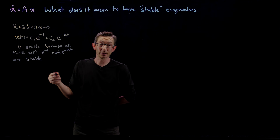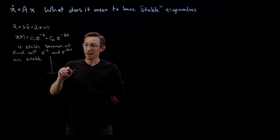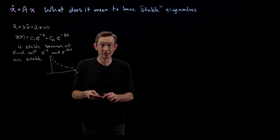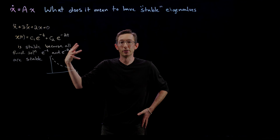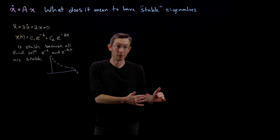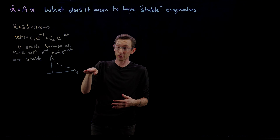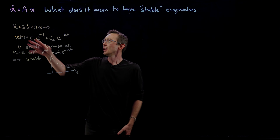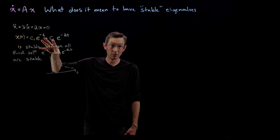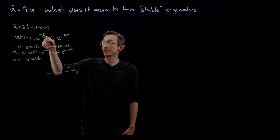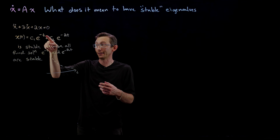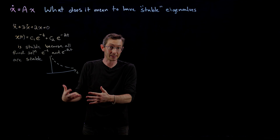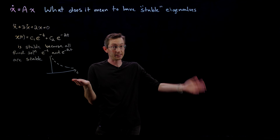What that means literally is that if I plot these functions as functions of time, they are decaying exponentials — they decay to zero as time goes to infinity. So this is stable because the solution goes to zero, remains bounded, and in fact converges to zero asymptotically as t goes to infinity. It's stable because e to the minus t and e to the minus 2t have negative real exponents, so they get arbitrarily small as t goes to infinity.